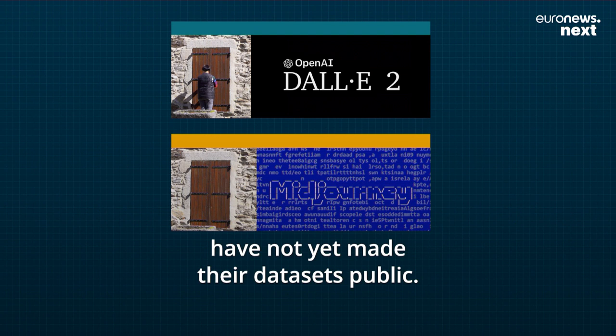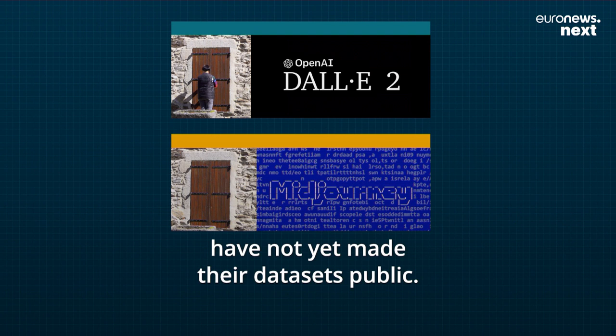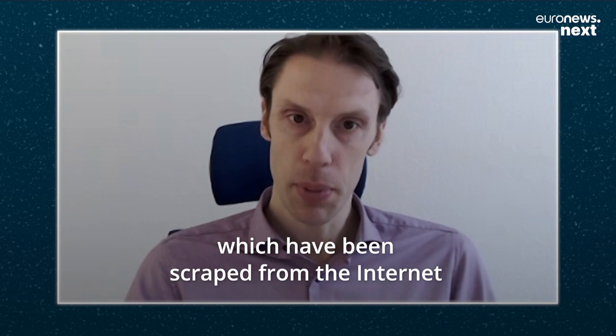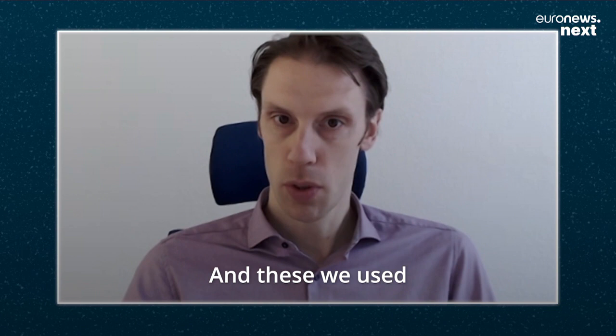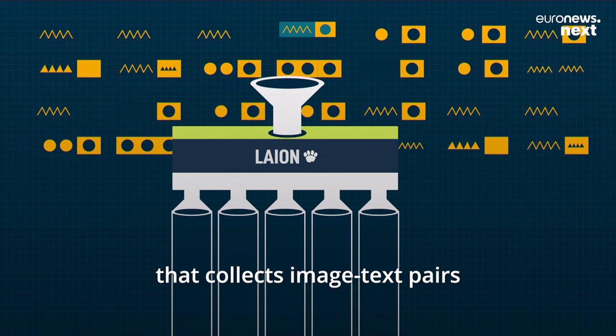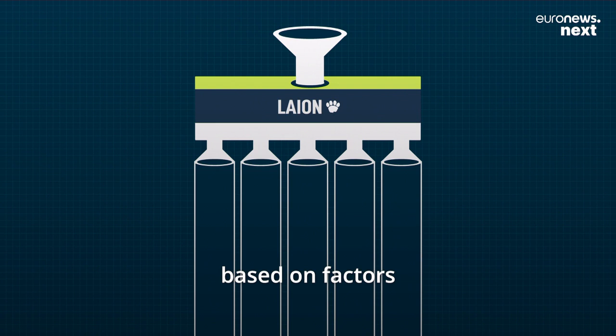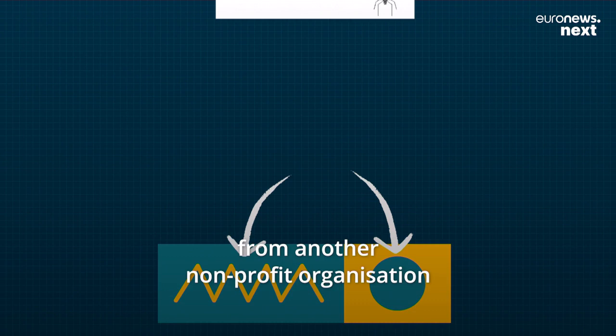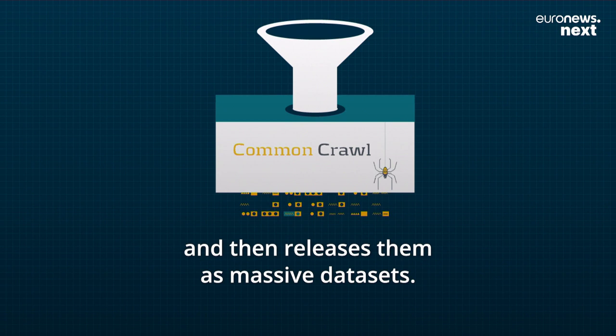DALL-E 2 and Midjourney have not yet made their datasets public. However, the open source AI Stable Diffusion has been more transparent about what it trains its AI on. There are now big datasets scraped from the internet publicly available, and they used mainly the LAION datasets, which consist of billions of images to train upon. LAION is a non-profit organization that collects image-text pairs on the internet and organizes them based on factors such as language, resolution, likelihood of having a watermark, and predicted aesthetic score. They get these image-text pairs from another non-profit called Common Crawl, which scrapes billions of web pages monthly and releases them as massive datasets.